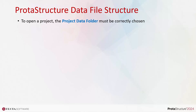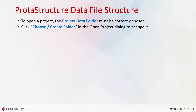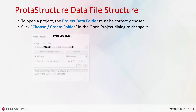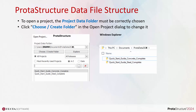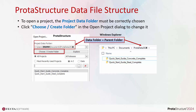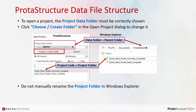To open a project, the project data folder must be correctly chosen. Click 'Choose / Create Folder' in the Open Project dialog to change the project data folder. The picture on the left shows the Open Project dialog of Protostructure; the picture on the right shows Windows Explorer with the project data folder opened. The default project data folder in Protostructure is always 'Protodata' plus a postfix of the release version number. In this parent folder, two default quick-start guide project folders are created. Notice that the project name is exactly the same as the folder name in Windows Explorer. Do not manually rename the project folder in Windows Explorer, otherwise you will not be able to open it, as it will disappear from the Open Project dialog.